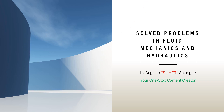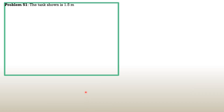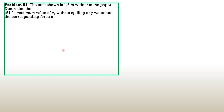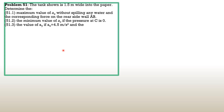Here's another problem on solved problems in fluid mechanics and hydraulics, particularly on the topic of rotated or relative equilibrium. Problem 51: the tank shown is 1.5 meters wide into the paper. Determine 51.1 the maximum value of ax without spilling any water and the corresponding force on the rear side wall AD; 51.2 the minimum value of ax if the pressure at C is zero; and 51.3 the value of ay if ax is 4.5 m/s² and the pressure at C is just zero.